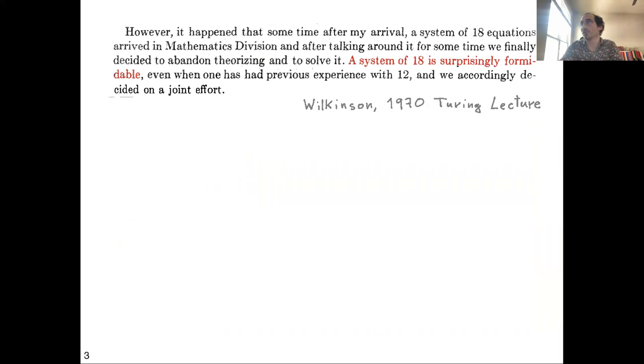They were working there and a certain problem arrived. As Wilkinson recounted: 'A system of 18 equations arrived in the mathematics division. After talking around it for some time, we finally decided to abandon theorizing and to solve it. A system of 18 is surprisingly formidable, even when one had previously experienced with 12.' So at the time, a system of 18 linear equations was a real computing challenge.